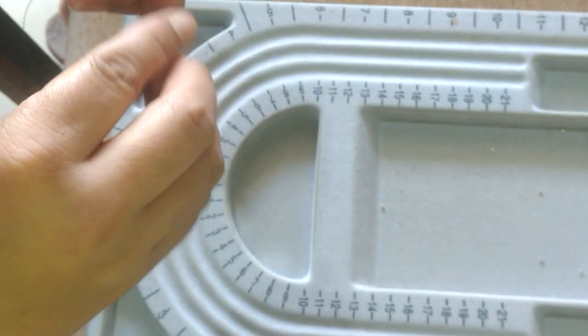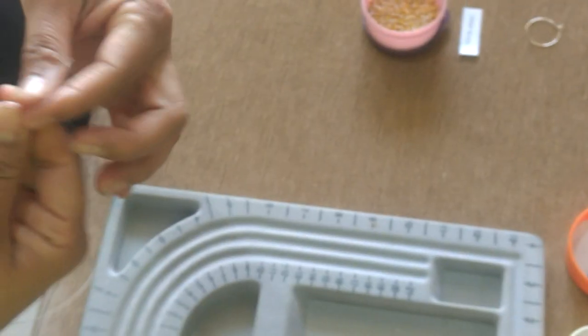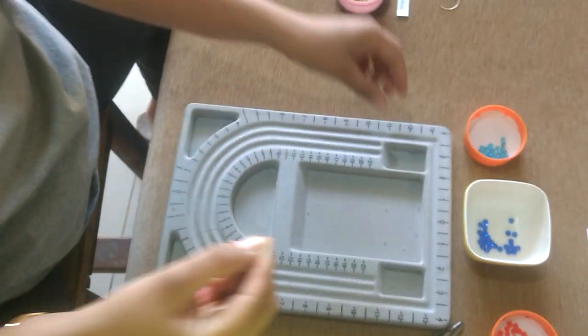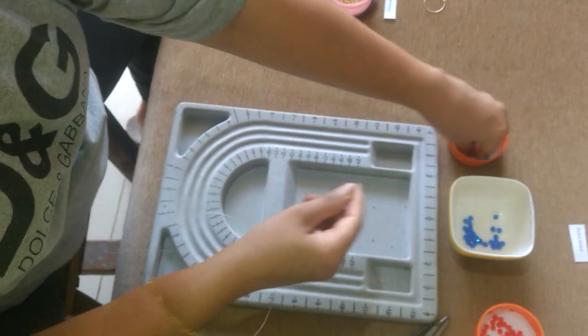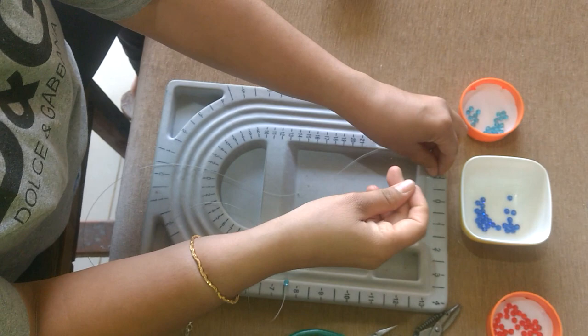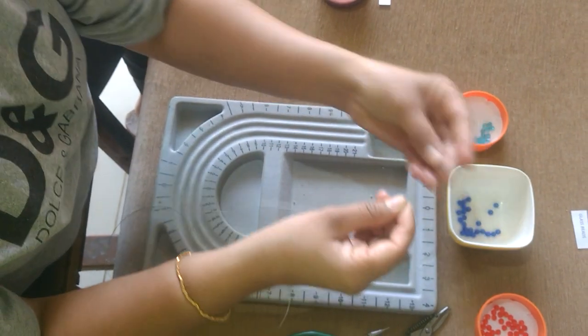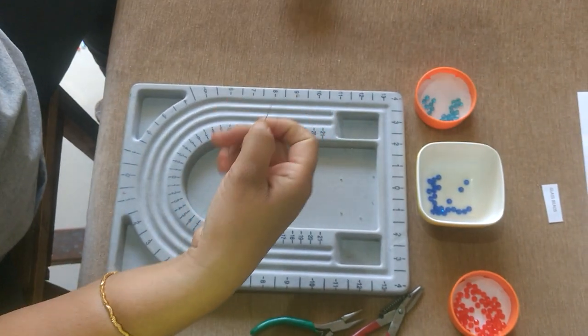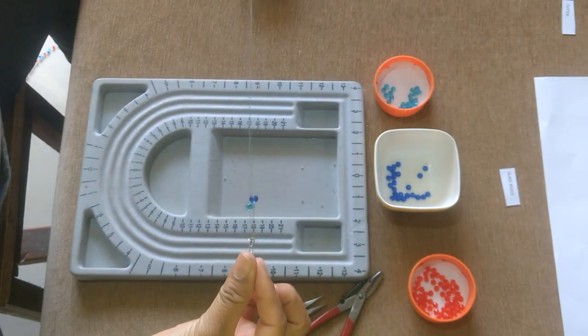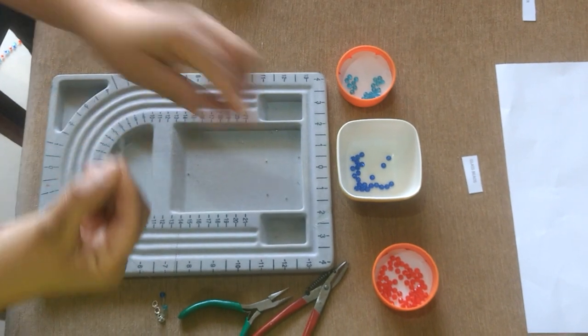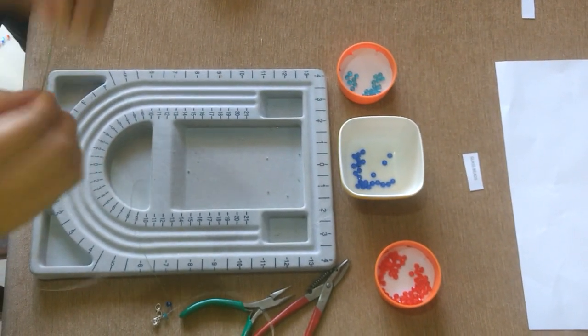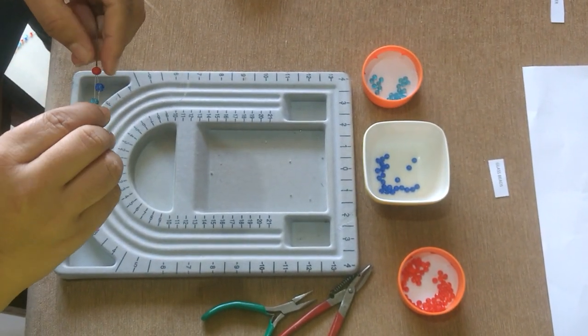Now we have this, so we'll cut this off. Now we'll start stringing in the crystal beads. First I'll put here light blue, dark blue, like this it will be, and then the red bead. I'm going to put both the strings inside the red bead so it's going to look something like this.